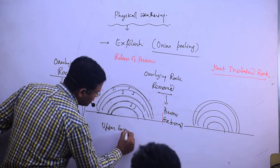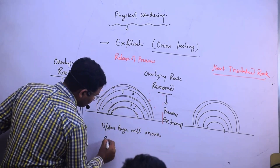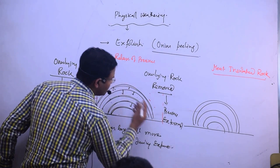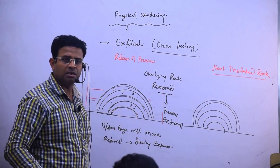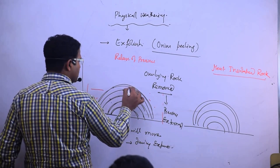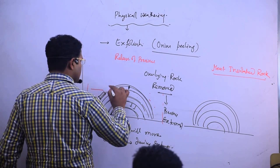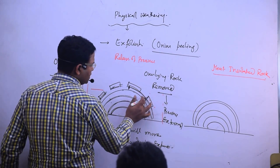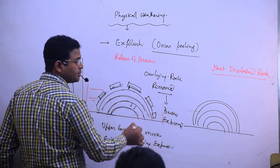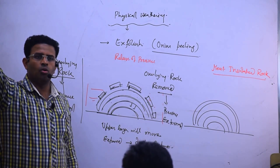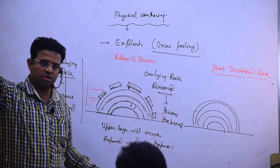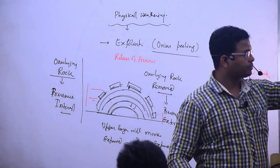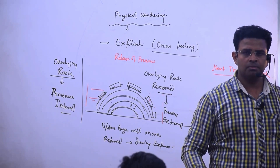The upper layer will expand more. During expansion, solid things start expanding and then start breaking. During external expansion it will break in sheets like this — and that is known as onion pilling or exfoliation due to release of pressure.